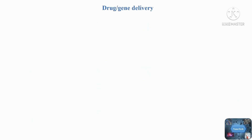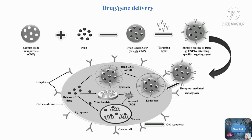Drug Delivery Application: Because of its inherent cytotoxicity toward cancer cells, the drug delivery application of nanoceria in cancer cells has a synergistic anti-cancer effect. The cell uptakes the drug with nanoceria coated with a specific targeting agent via endocytosis. Because of the low pH and high GSH in endosomes and lysosomes, drugs are released into the cytoplasm, where they bind with DNA and cause denaturation, or in mitochondria, where they increase the production of ROS, which further attacks the nucleus and causes DNA denaturation, resulting in cell death.